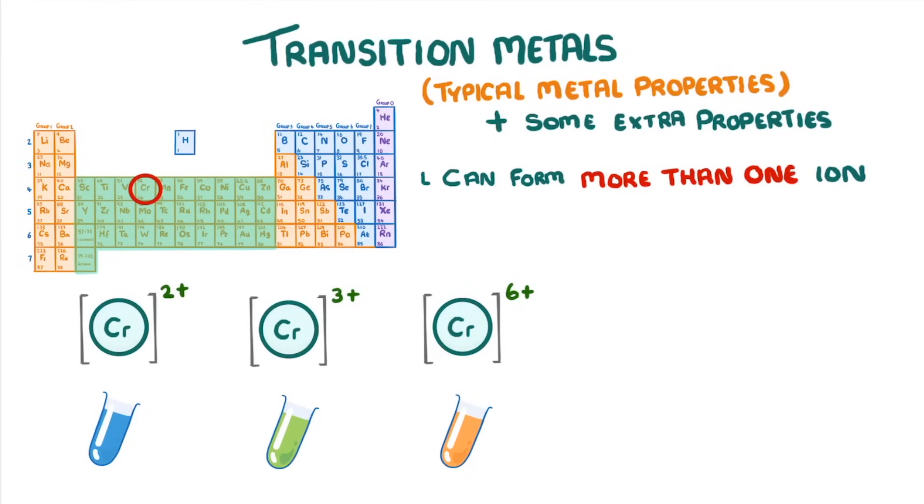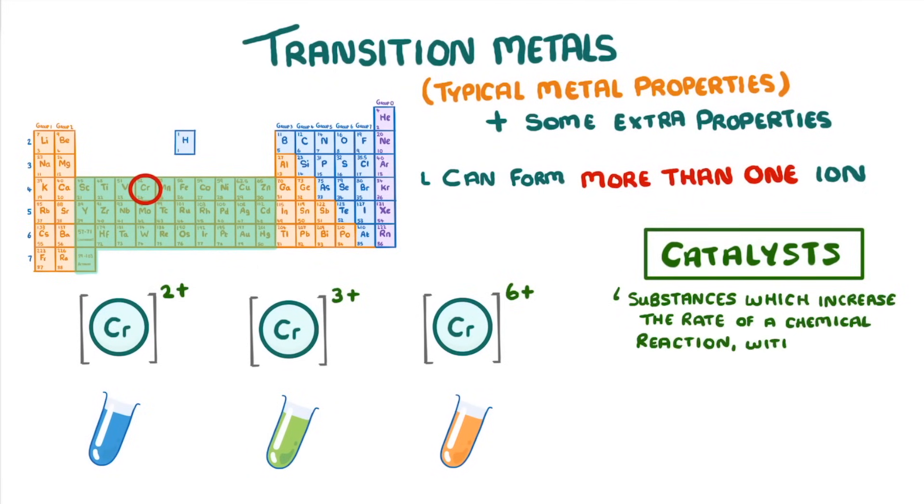The most important practical feature of transition metals though, is that they make very good catalysts, which is an important term to remember. We can describe a catalyst as substances which increase the rate of a chemical reaction, without being used up themselves. For example, you'll see later in the course, that iron is an important catalyst in the Haber process, which we use to make ammonia. While nickel is used in the hydrogenation of alkenes, which we use to make margarine.